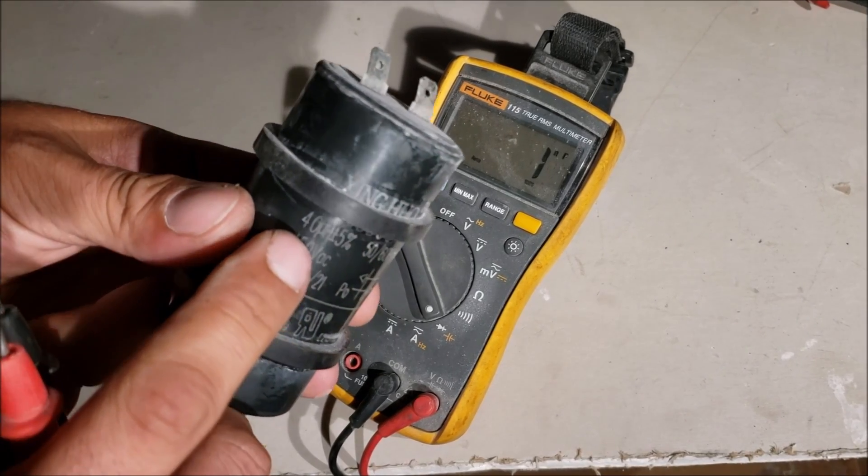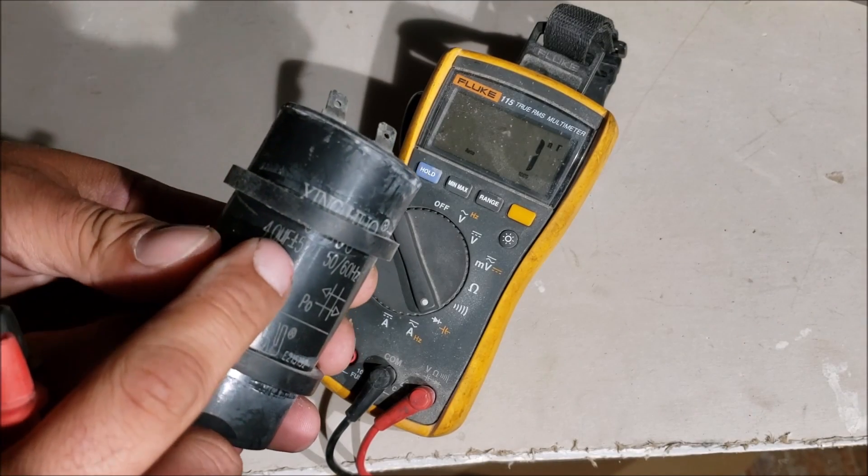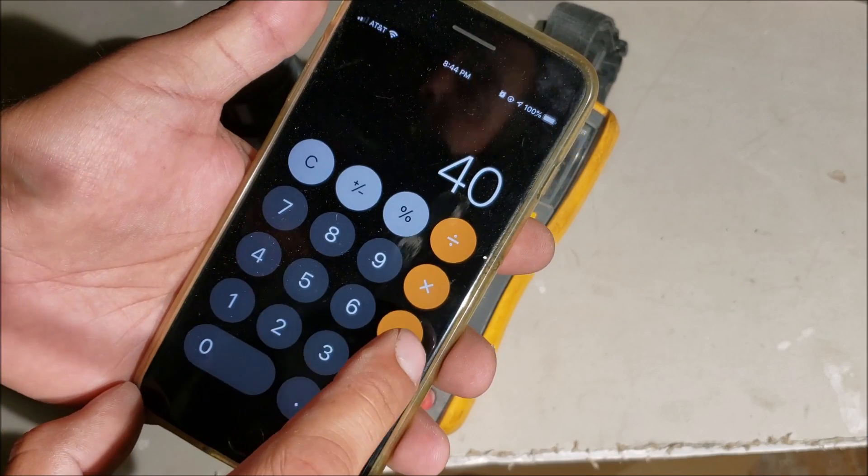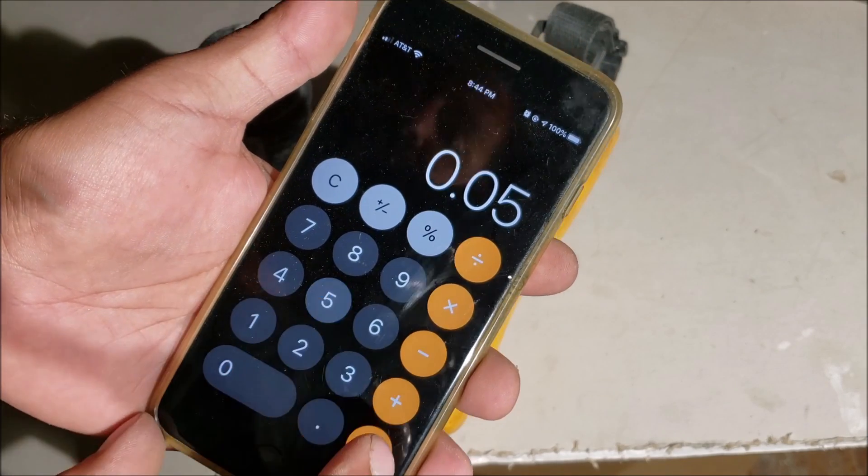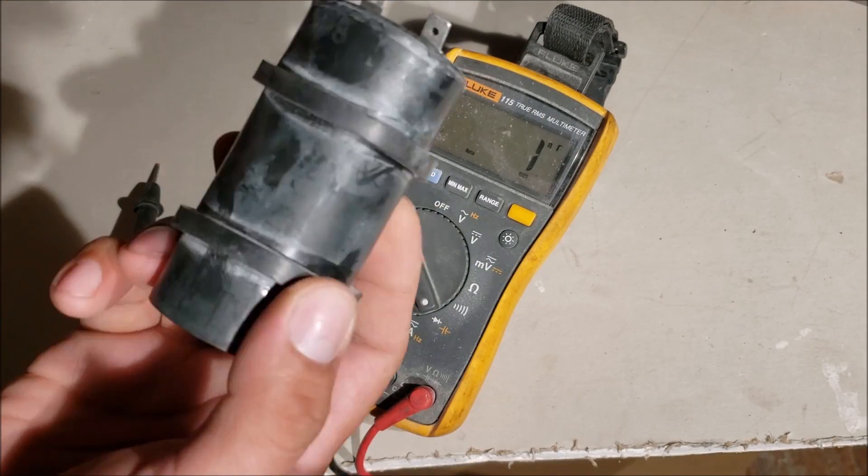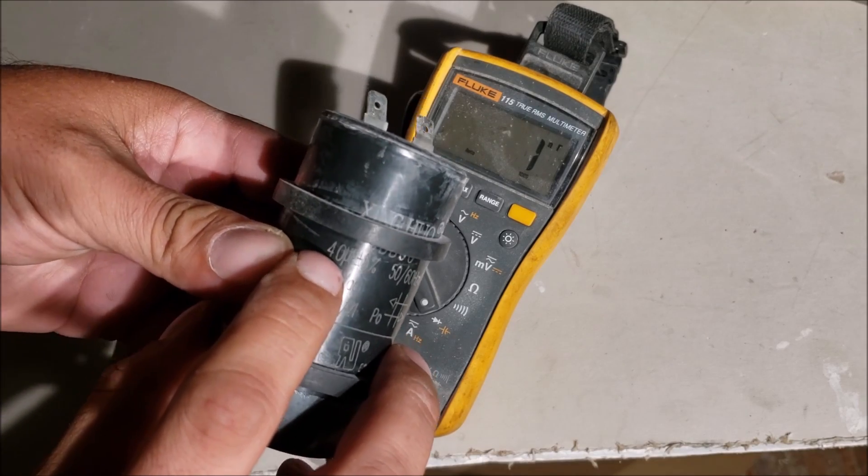Because this is the wrong capacitor off the same air compressor, it's showing a value of 40 microfarads plus or minus five percent. You take your 40 microfarads, multiply by a percentage of five, it gives you two. That means this capacitor must be in the range of minus two, which is 38, to plus two, which is 42 microfarads.